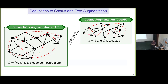What's important to know is that this general problem of connectivity augmentation — and I should say I'll talk about the unweighted version, where you find a minimum number of links — actually reduces in its full general form to what people call cactus augmentation. That's just the same problem, but the underlying graph is a cactus.